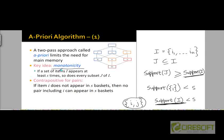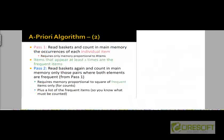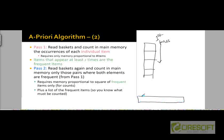The A Priori algorithm uses this monotonicity property. In the first pass, it reads all the baskets one by one and keeps a count in main memory of the occurrences of each individual item. If there are N items in the store, we just need to keep an array of size N, each cell taking four bytes, which is sufficient to count how many times each item appears as we parse through the file.